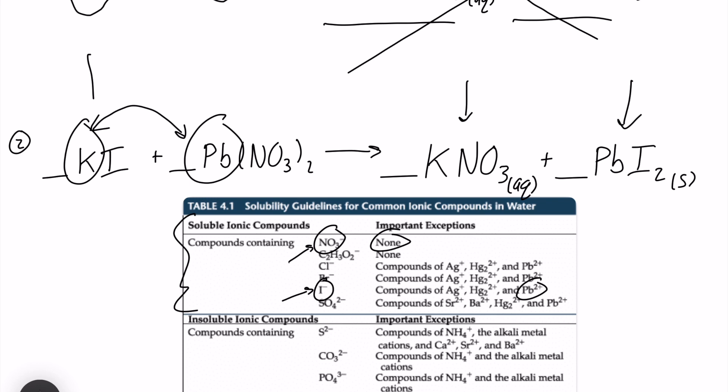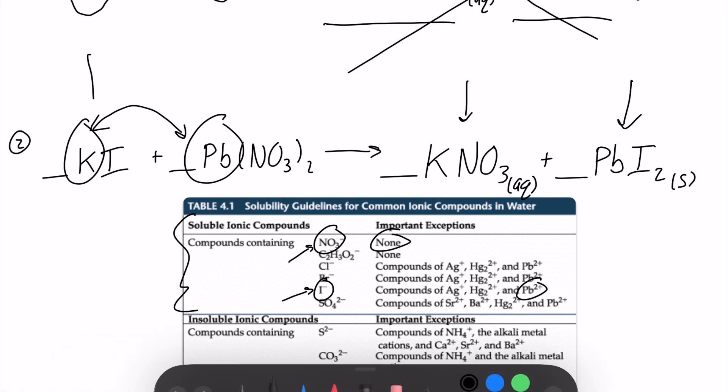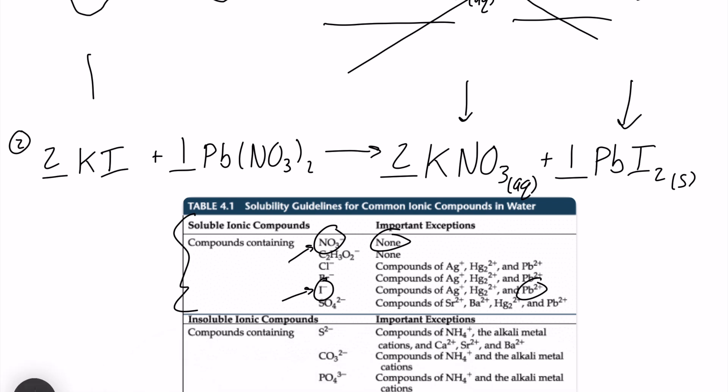Okay, so the last step here is to just balance this up. So I'm going to go ahead and make this a little bit neater for ourselves. We can balance this here really quick. So I'll put a 2 in front of potassium iodide and a 2 in front of potassium nitrate, as well as a 1 in front of lead-2 nitrate and a 1 in front of lead-2 iodide. So that is the answer. That's how to predict products for double displacement reactions.